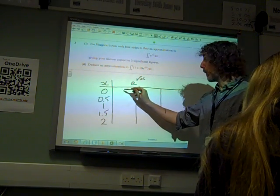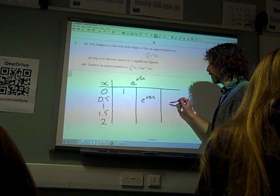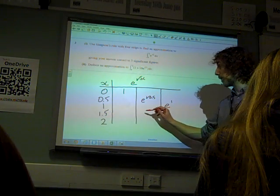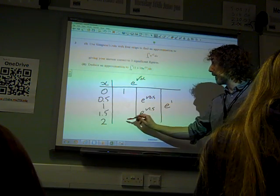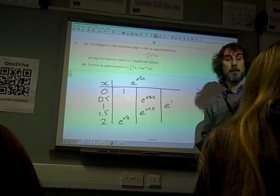if we are doing our table, is e to the 0, which will be 1, e to the root 0.5, e to the root 1, e to the root 1.5, and e to the power of root 2. So they're the values.